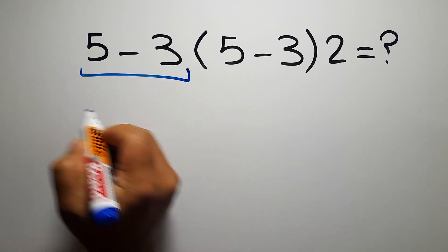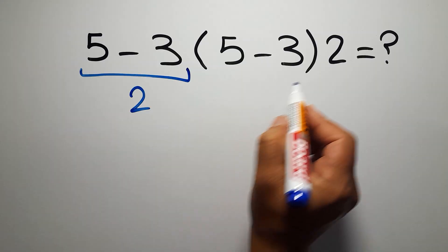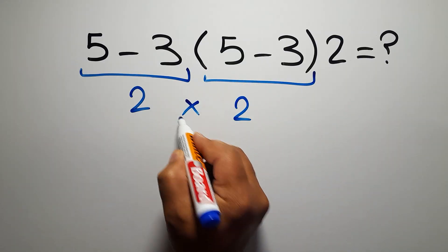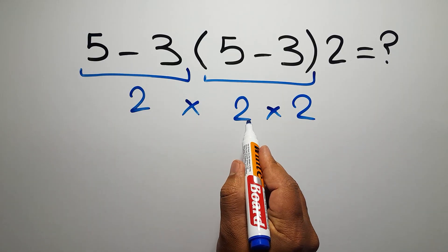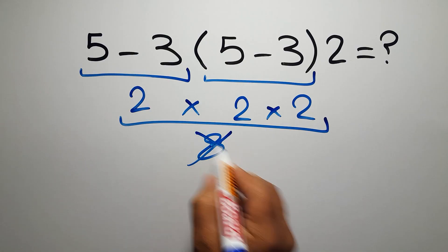5 minus 3 equals 2, and here again we have 5 minus 3 which equals 2, so 2 times 2 and again times 2. 2 times 2 equals 4, and 4 times 2 is just 8, but this answer is not correct.